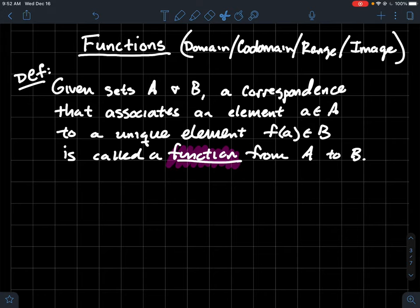If you're given two sets A and B, then a correspondence that associates an element, little a, of your set A to some unique element, we'll call it f of little a, and that's just an element of B, that correspondence is called a function from A to B. And as you might have guessed, we're going to name our function, probably name it f, that's why I use that letter.